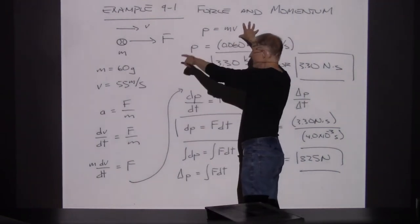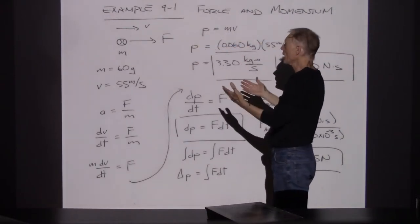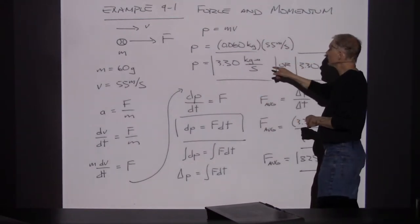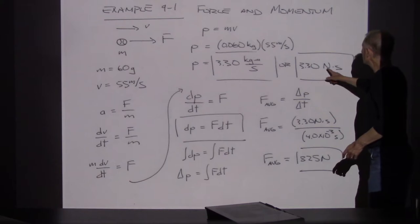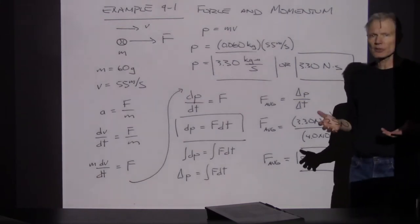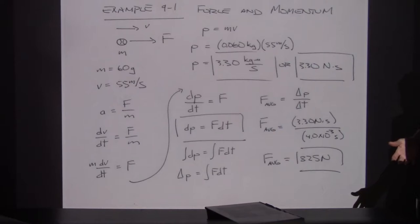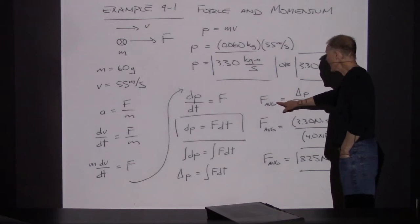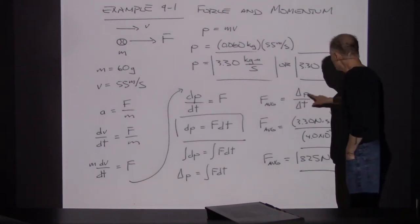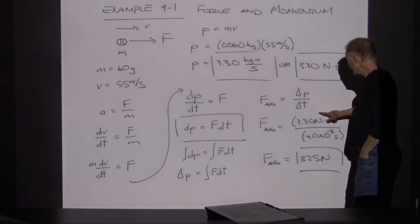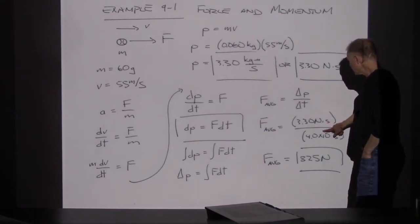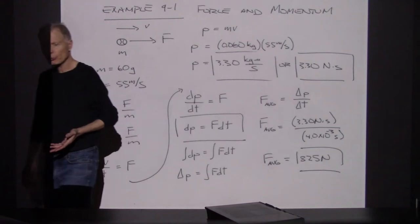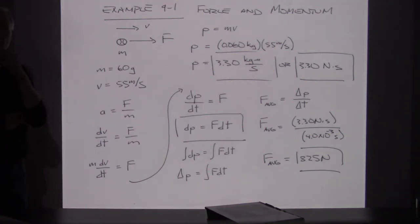The momentum that the tennis ball acquires is equal to m times v. Multiplying those numbers together, that works out to be 3.30 newton seconds — that's how many units of momentum the tennis ball has after being hit with the racket. The average force is delta p over delta t. This was the amount of momentum transferred in 4 milliseconds, so the force averaged to be 825 newtons.